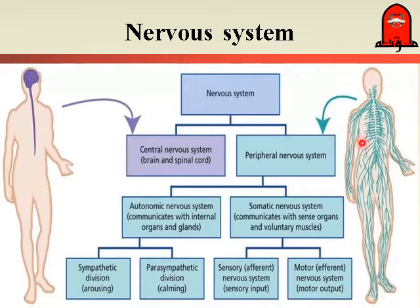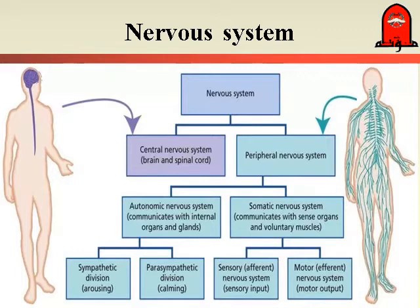The Peripheral Nervous System represents all the nerve fibers present all over the body. This Peripheral Nervous System can be divided into two groups: the Somatic Nervous System and the Autonomic Nervous System. The Somatic Nervous System includes the nerve fibers that supply the sense organs and voluntary skeletal muscles, while the Autonomic System is responsible for supplying the internal organs and glands. The Somatic Nervous System can be divided into sensory parts and motor parts.